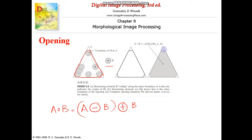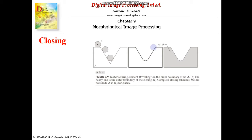The rest of the portions are not covered, and this is the opening of A by B. It can also be described using translation: B is translated in such a way that it is totally contained in A. That is all about opening. Next is the closing operation.